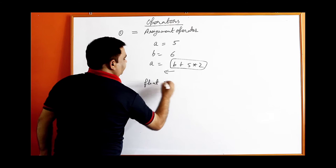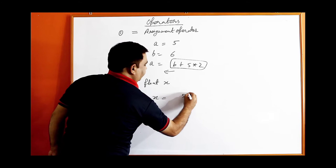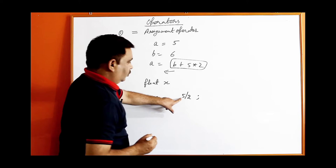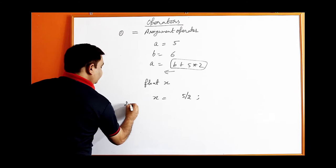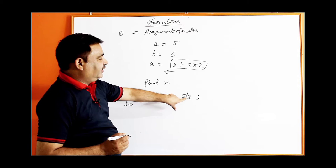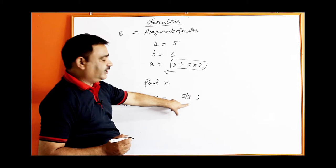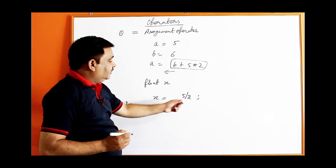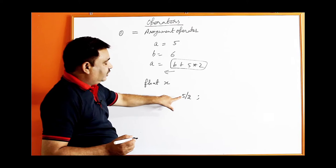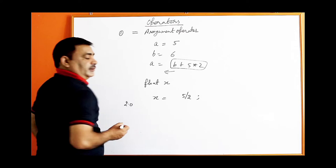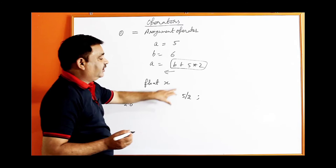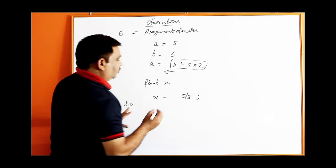Suppose I declare float x and write x equal to 5 divided by 2. The result will be 2.0, not 2.5. Why? Because 5 is integer and 2 is integer — when you divide an integer by an integer you always get an integer result, which is 2. When stored in float x it becomes 2.0. To get 2.5 you should write 2.0f or 2f instead of 2.